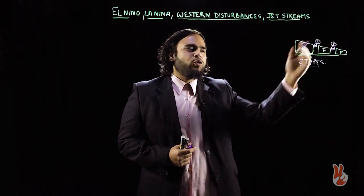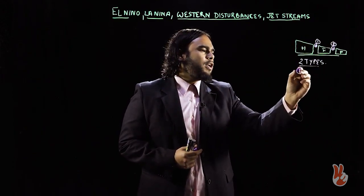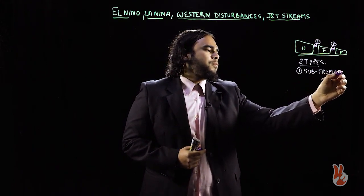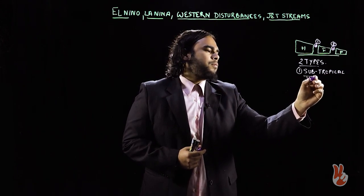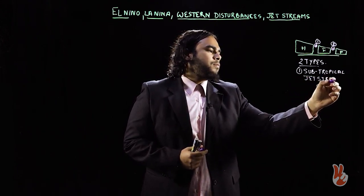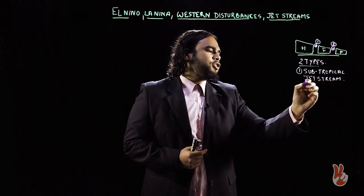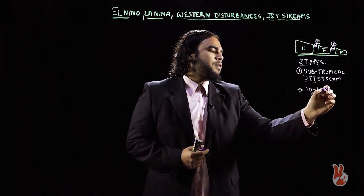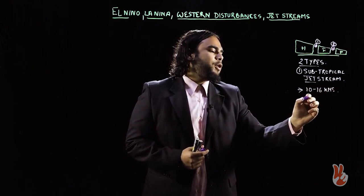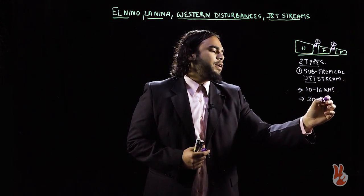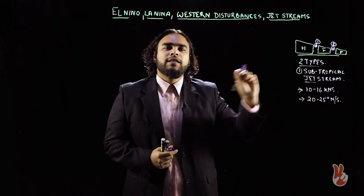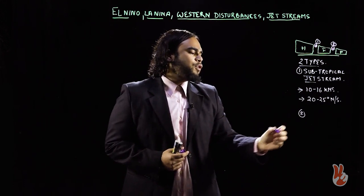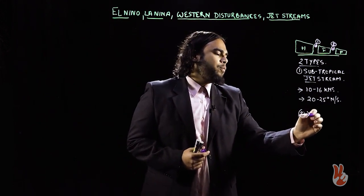Based on contrasting air masses we have two types of jet streams. The first is called the subtropical jet stream. This jet stream extends between 10 to 16 kilometers altitude and is present between 20 to 25 degrees north or south latitude.